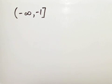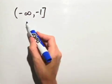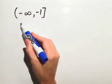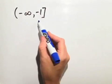We're asked to express this interval in set builder notation and graph the interval on a number line. In this case, we have an infinite interval starting at negative infinity and proceeding until we get to negative 1, including negative 1.